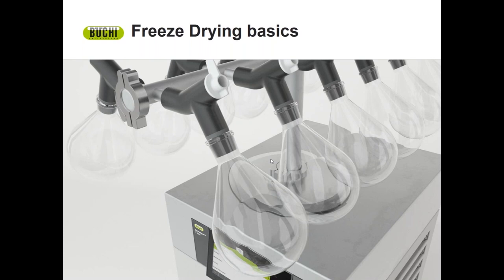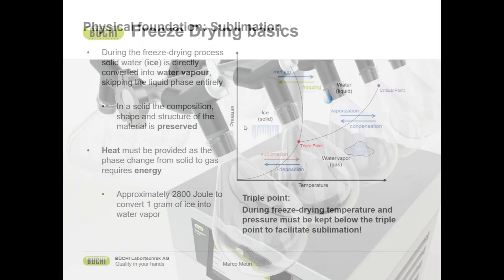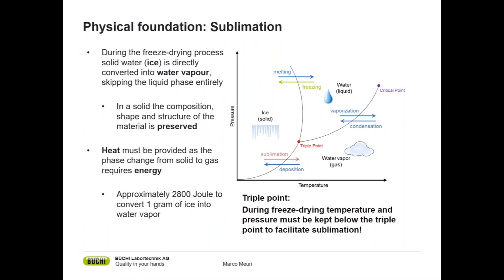Before we go into actual freeze drying, we will need to look at the physical foundation of sublimation. Water can be available in three different forms: as a solid — ice — as a liquid, or as a gas in vapor form. Within freeze drying, we use the effect of sublimation, meaning we turn solid ice directly into water vapor without moving over the liquid phase.